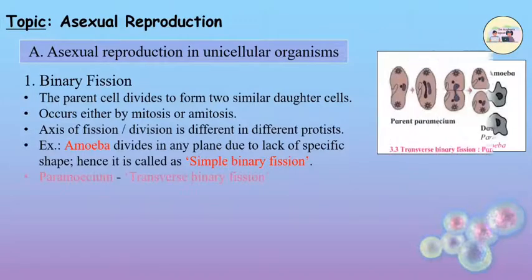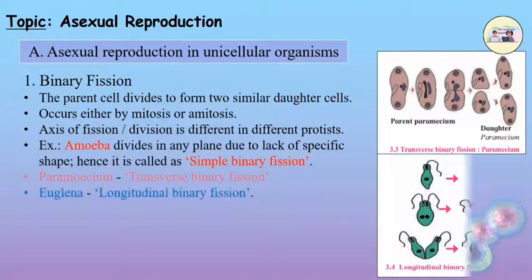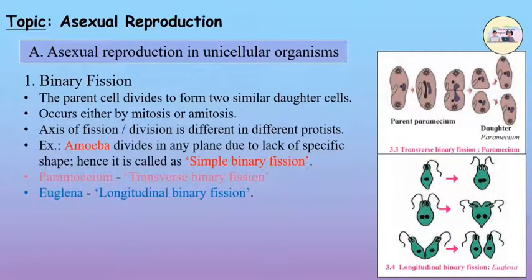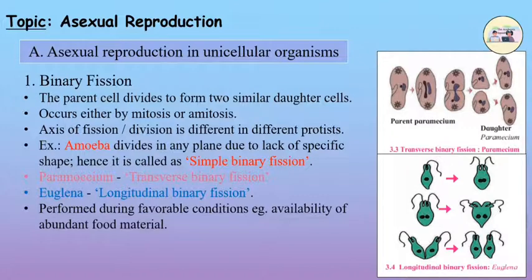Paramecium divides by transverse binary fission, whereas Euglena divides by longitudinal binary fission. Binary fission is usually performed by living organisms during favorable conditions, i.e., availability of abundant food material.